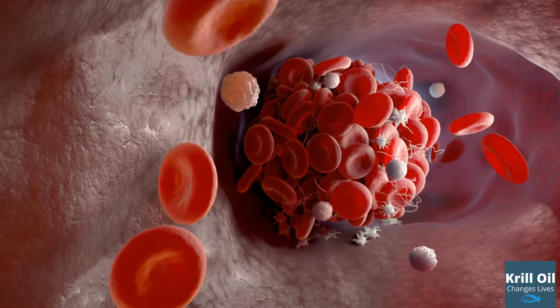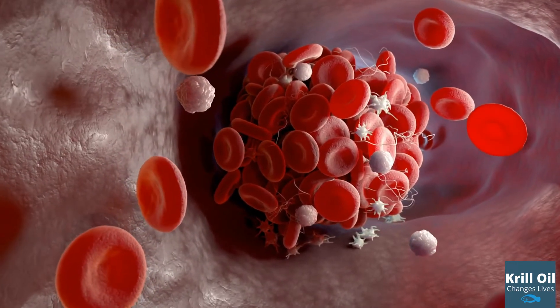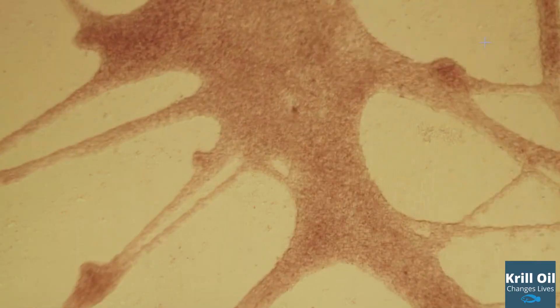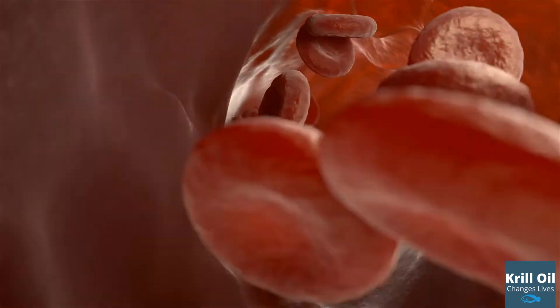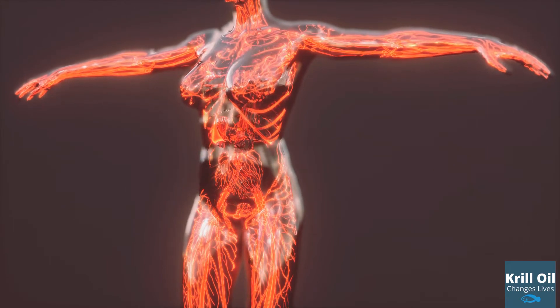Both DHA and EPA have been shown to lower triglycerides, a fat that circulates in the blood and can lead to clogged blood vessels and contributes to high levels of bad cholesterol. EPA and DHA also have been shown to reduce inflammation, which can lead to healthier circulatory systems and better heart health.